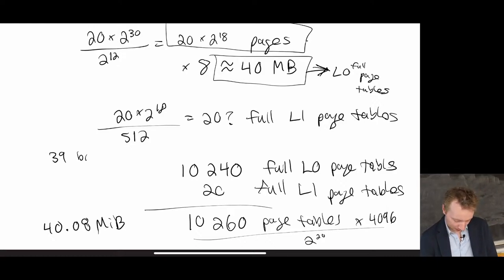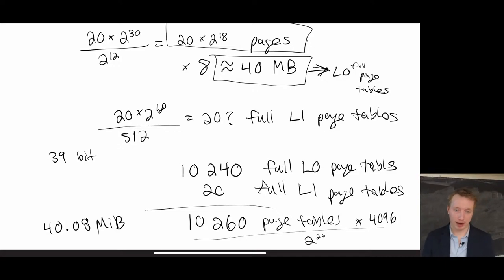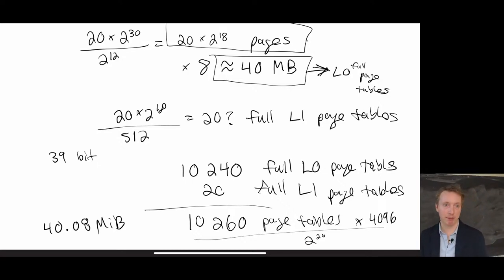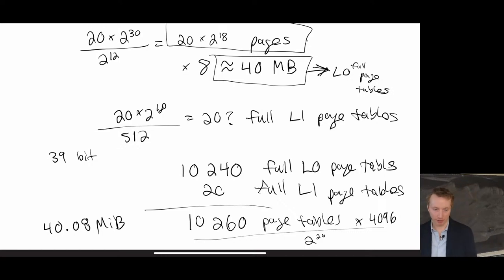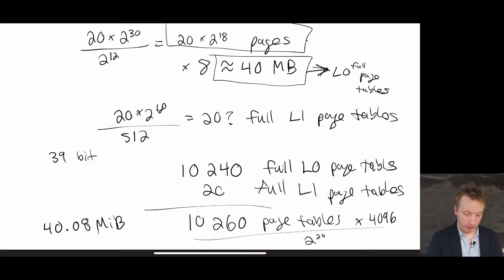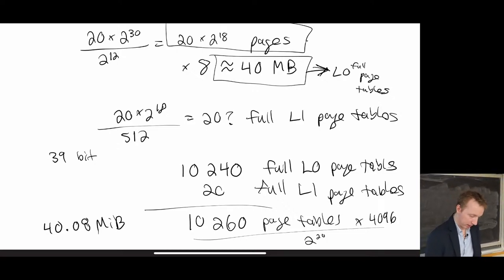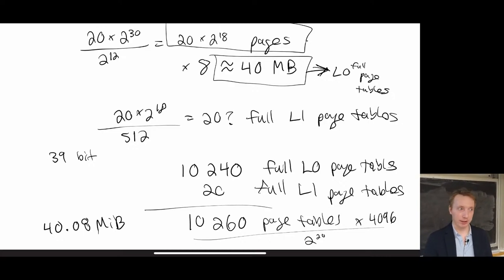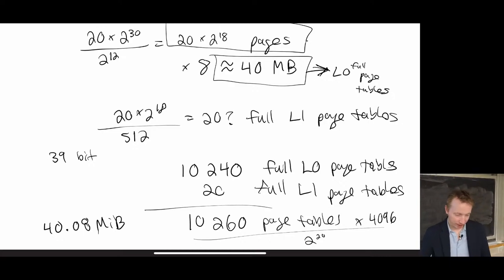If I have a 39-bit virtual address space, that means I can address up to 512 gigabytes. To map 20 gigabytes — that's essentially 20 entries in my L2 page table, and each entry can map up to a gigabyte. Every process needs to have an L2 page table to exist, so you can assume it already exists — otherwise that process wouldn't be running.